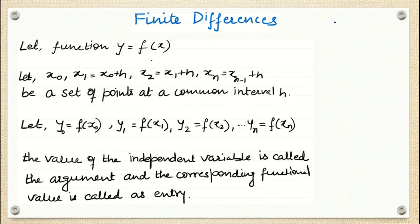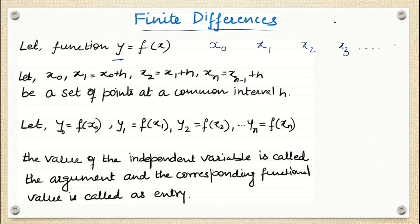So what is finite differences? Suppose one function y is with respect to x, so y = f(x). Finite differences says that we have some instances of x: x₀, x₁, x₂, x₃, ..., xₙ. All these values are equidistant, meaning the difference between consecutive values is h. So the difference between x₀ and x₁ is h, between x₁ and x₂ is also h, and so on.